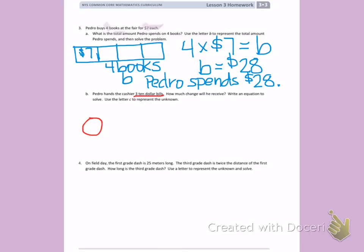If I draw a number bond with the first $10 bill, the second $10 bill, and the third $10 bill, I can find out how much money he hands the cashier by counting $10, $20, $30. He hands the cashier $30.